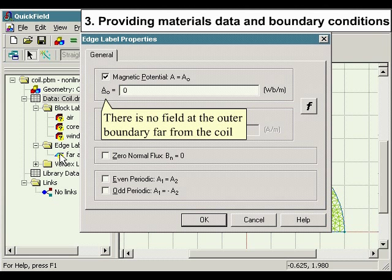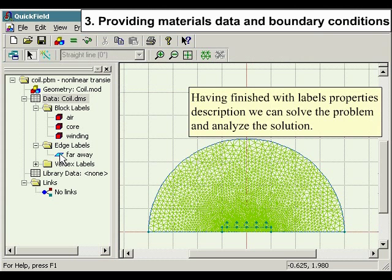There is no field at the outer boundary far from the coil. Having finished with the labels properties description, we can solve the problem and analyze the solution.